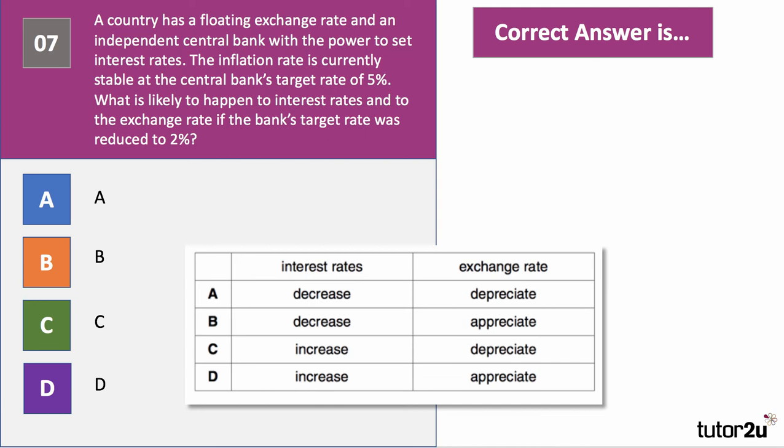The inflation target comes down to two percent, so the central bank needs to get inflation down from five percent to two percent. That would typically require higher interest rates at least in the short term, so interest rates are likely to go up — the answer is either C or D. Higher interest rates attract hot money into the economy, and all else equal, that will cause a floating exchange rate to appreciate. Therefore the answer to question seven is D.